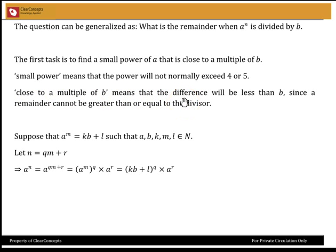What is close to a multiple of B? That's basically saying that the difference has to be less than B. We are looking for a remainder, remember? The remainder cannot be greater than or equal to the divisor. So we want to look for something like a remainder.